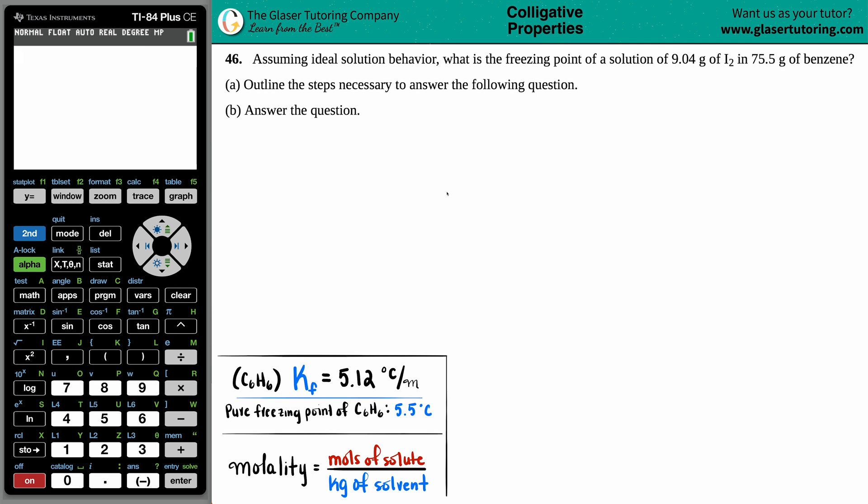Number 46. Assuming ideal solution behavior, what is the freezing point of a solution of 9.04 grams of I2 and 75.5 grams of benzene? We need to outline the steps necessary to answer the following problem and then we must answer the problem.